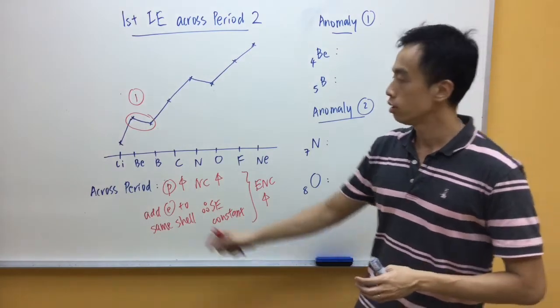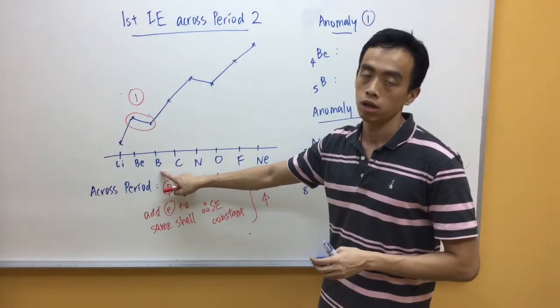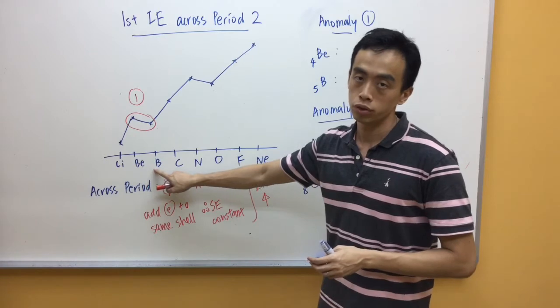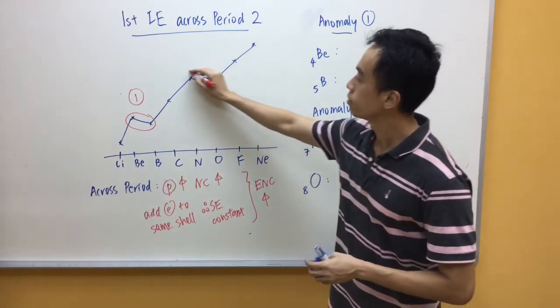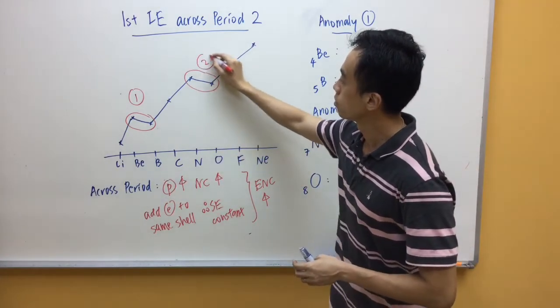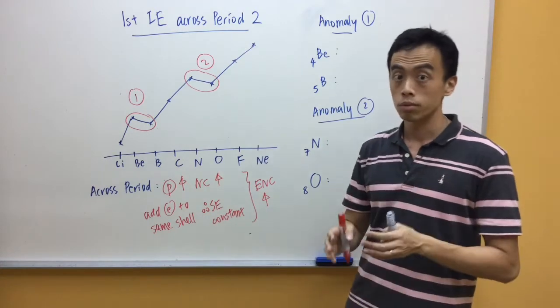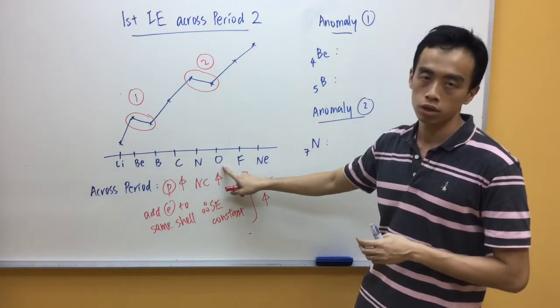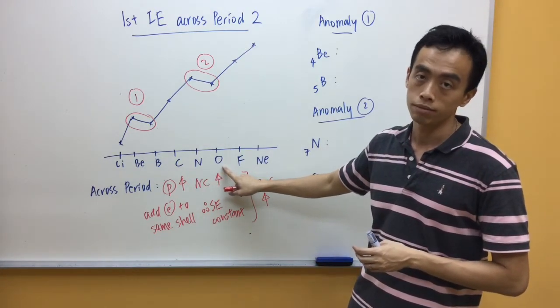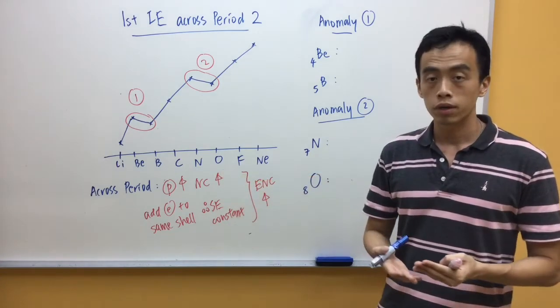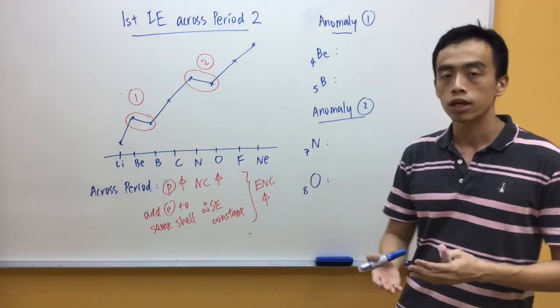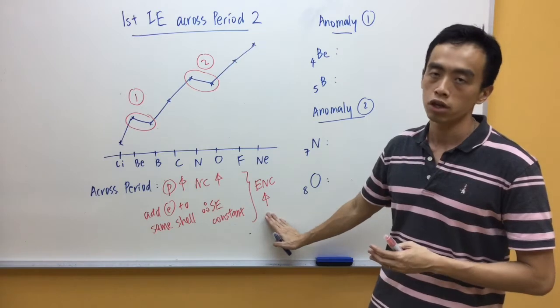Now, the first anomaly is between beryllium and boron, our group 2 and group 3 elements. Now, the second anomaly is between nitrogen and oxygen, our group 5 and group 6 elements. Now, in order for us to explain these two anomalies, of course, we cannot depend on effective nuclear charge anymore.